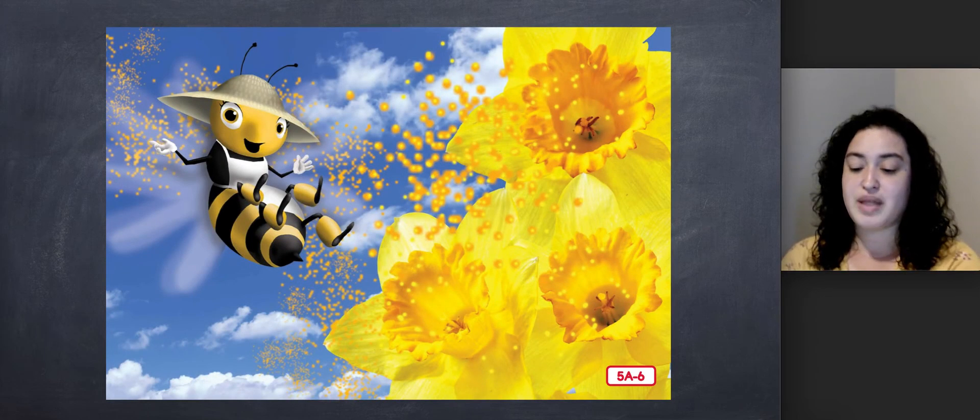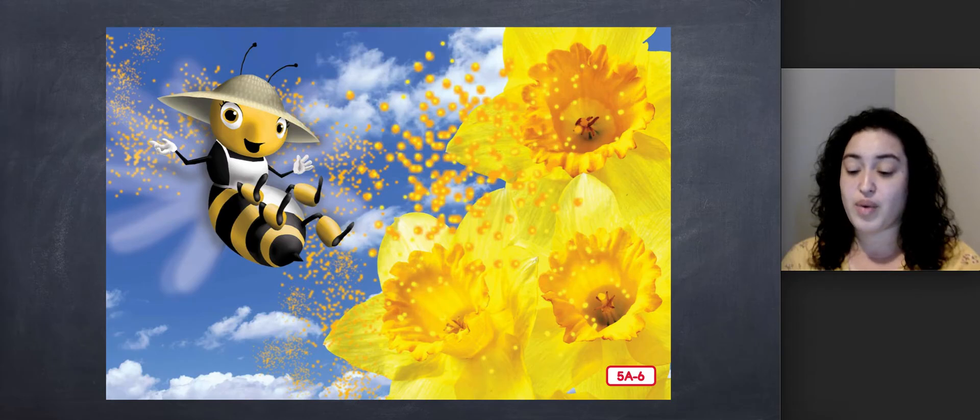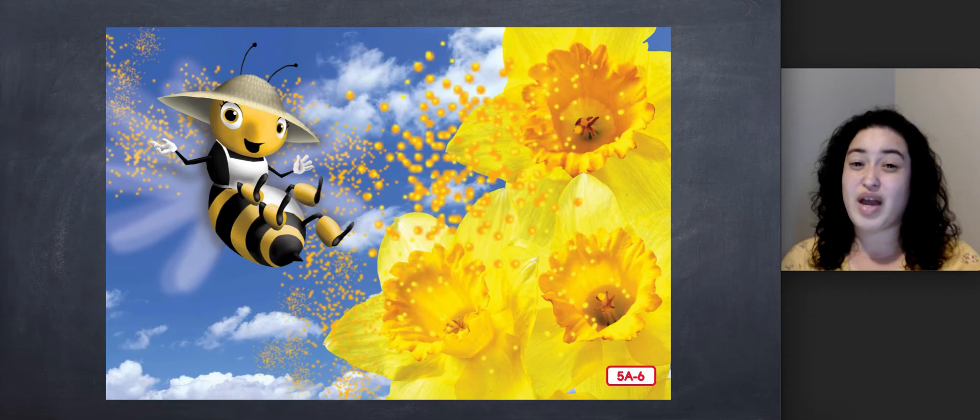How do plants get pollen from other plants? Plants can't walk around like human beings, and they can't flap their wings and fly like us bees either. Luckily, the pollen grains themselves are very small. They can be blown from one plant to another by the wind. So, the wind helps pollinate plants so they can make new plants.